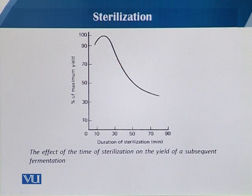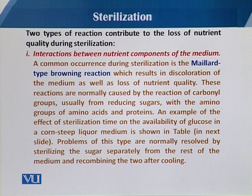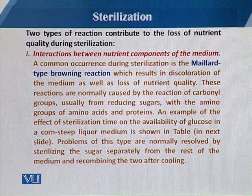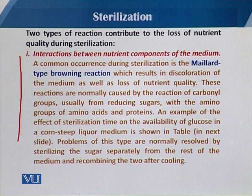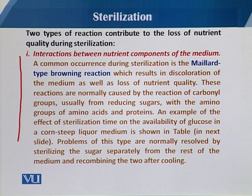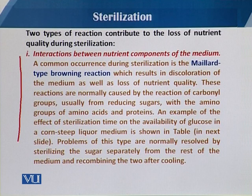This graph shows how sterilization time affects the fermentation product. There are two types of reactions which contribute to the loss of nutrient quality during sterilization. The first is the interaction between nutrient components of the medium, where one component reacts with another at high temperature. A common occurrence during sterilization is a Maillard-type browning reaction, which results in the discoloration of the medium as well as the loss of nutrient quality.